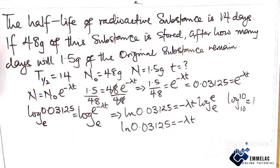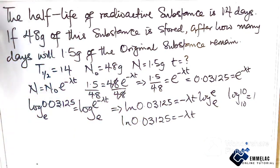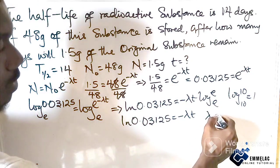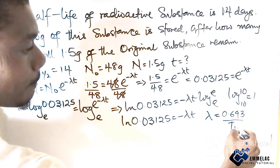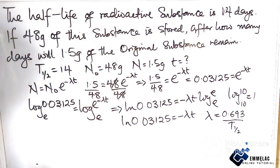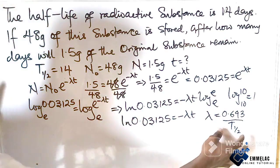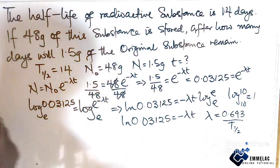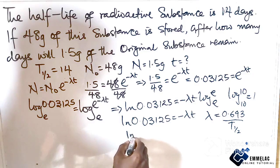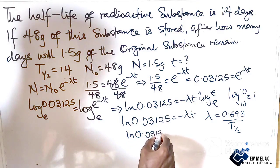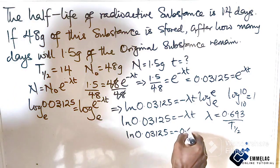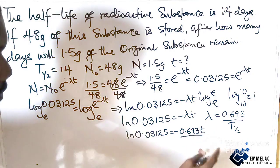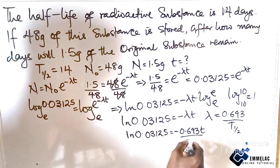Alright, let's move further. Now let us recall that the decay constant λ equals 0.693 over half-life. So in this case, let us put this into this equation. So here we have ln(0.03125) equals -0.693t over 14, where our half-life is 14.